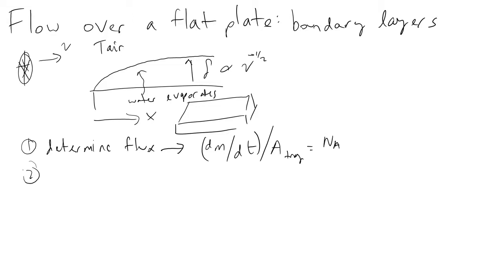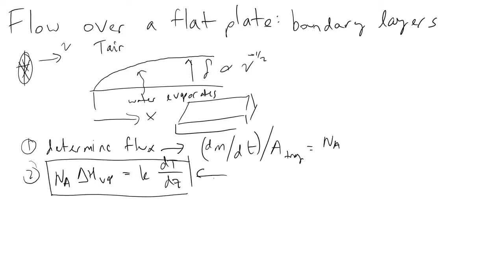With this quantity, because we can look up tabulated values of the heat of vaporization of water and the thermal conductivity of air, we can evaluate the temperature profile of air by coupling it into an energy balance. This energy balance states that the flux of water times the heat of vaporization of water must be equivalent to the thermal conductivity of air times dT/dz. Intuitively, the energy flowing from the bulk fluid into the water must equal the energy required to evaporate the mass of water evaluated previously.